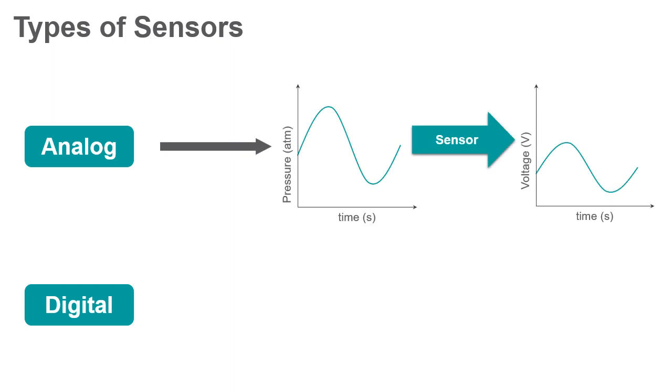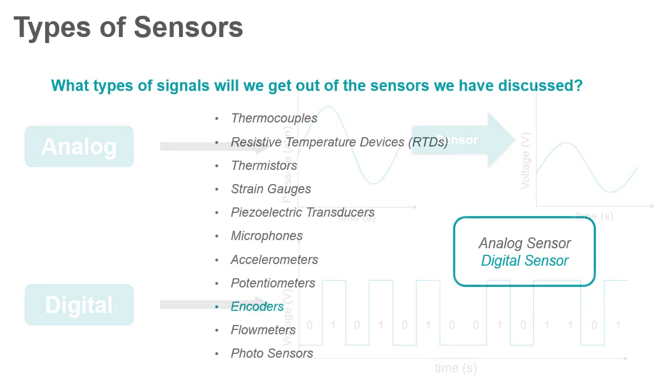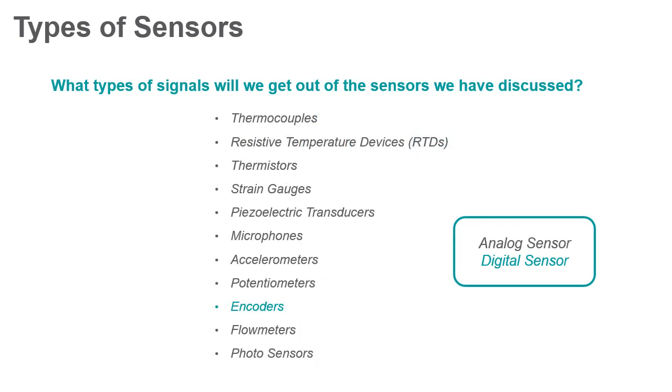Analog signals are a direct representation of what is being measured. They trace what is being measured through a range of values. Conversely, digital signals represent a discrete set of possible values, which are usually binary. Most sensors are analog, although digital sensors, such as encoders, do exist.